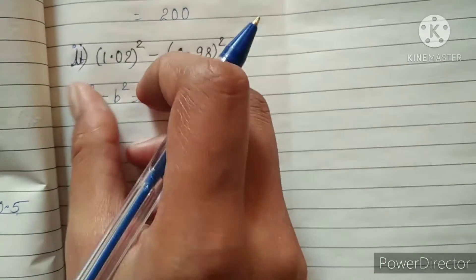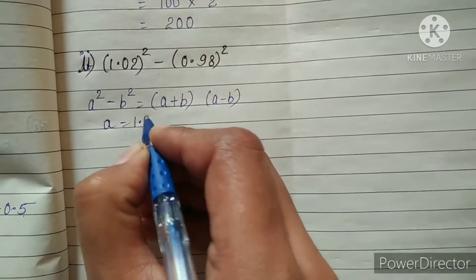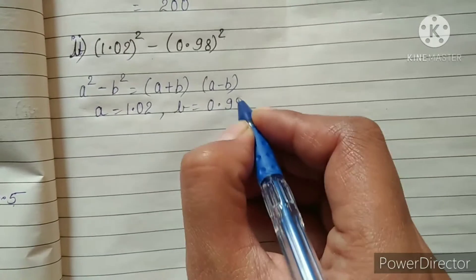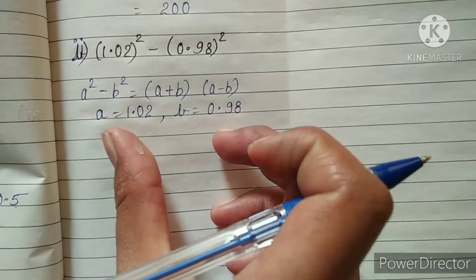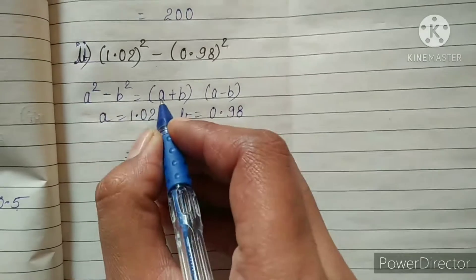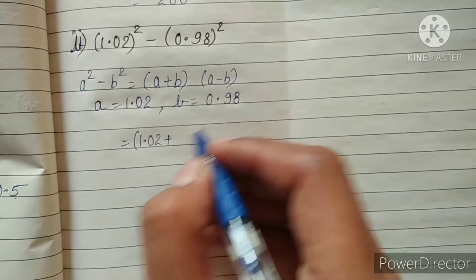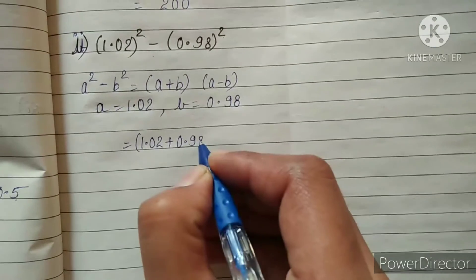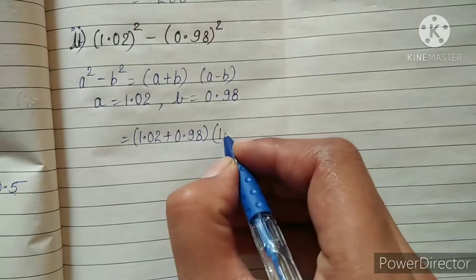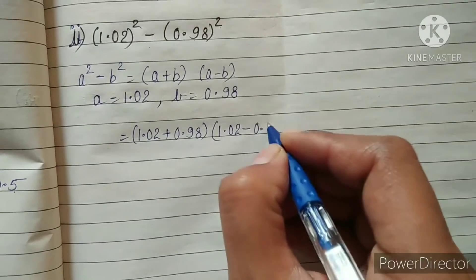Comparing the question with the identity, a is 1.02 and b is 0.98. We put these two values inside the identity: 1.02 plus 0.98 multiplied by 1.02 minus 0.98.